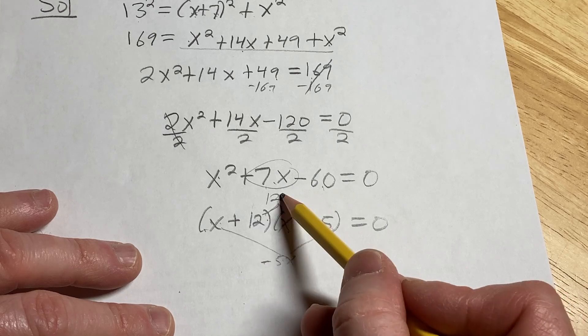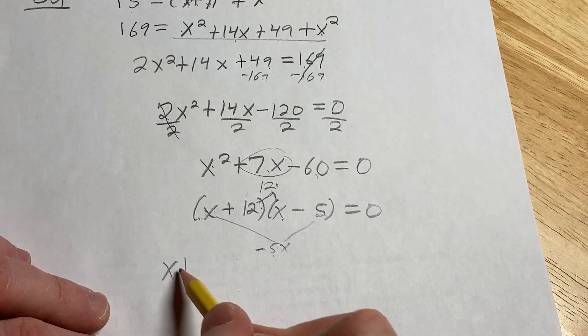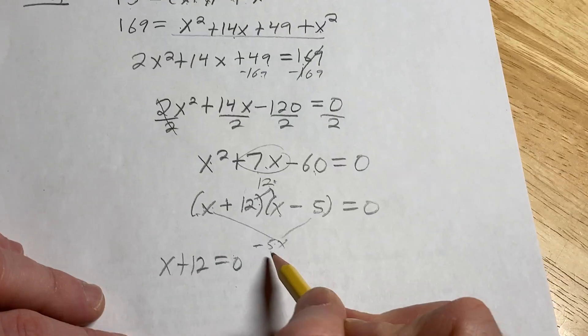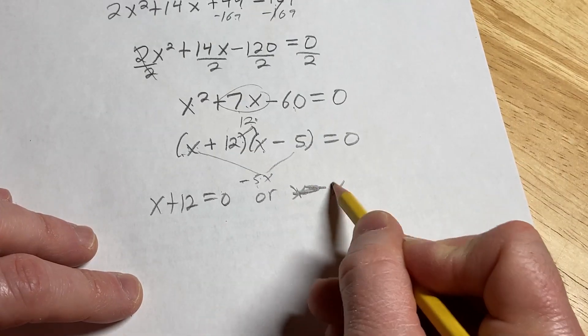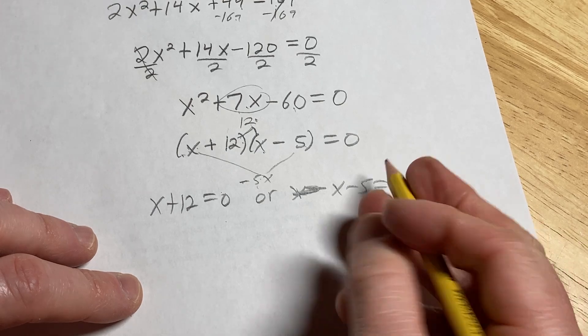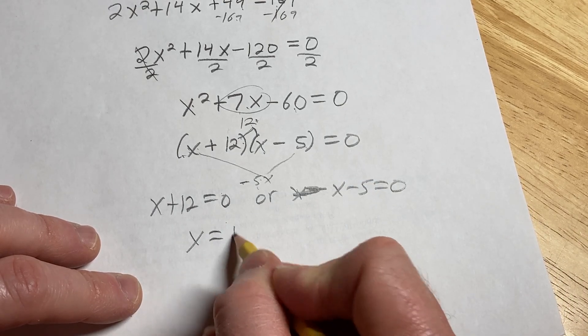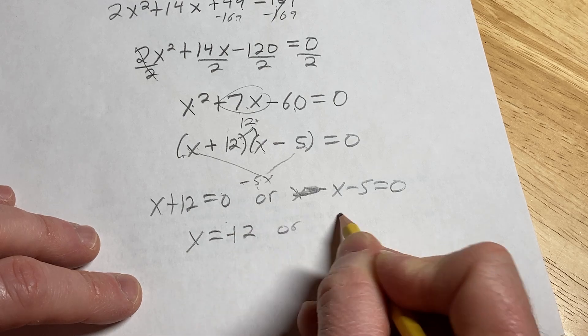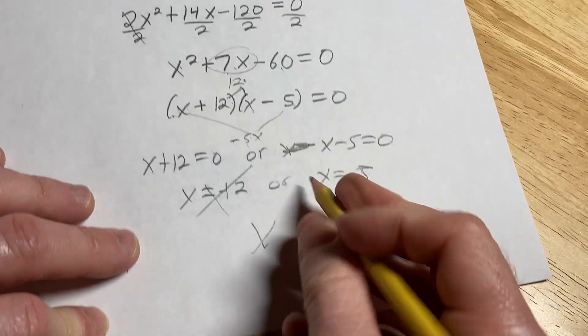If a product equal to zero, you set each factor equal to zero. And then we solve for x, we get negative 12 or x equals 5. But x can't be negative. So the answer is x equals 5.